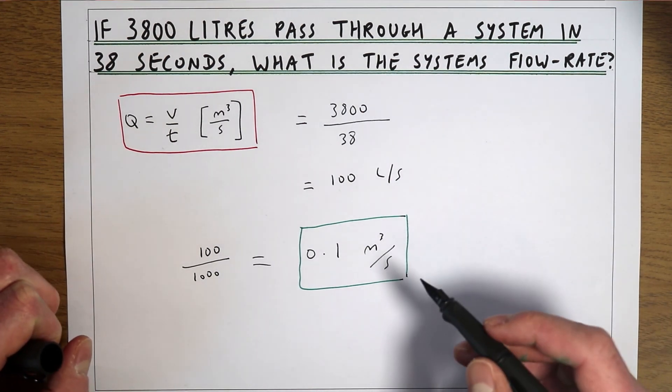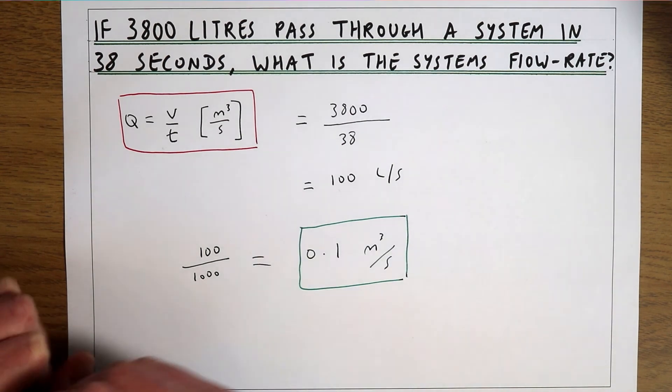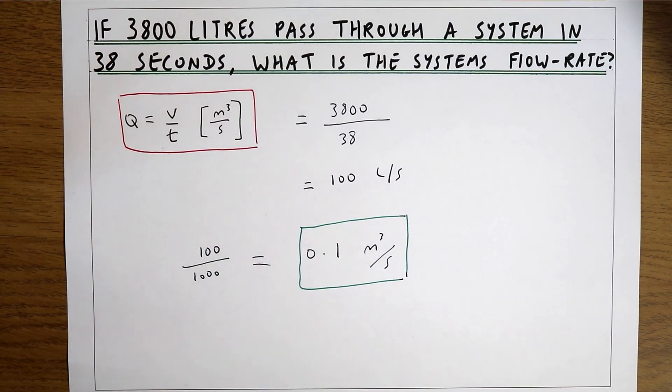If every second that this system is running 0.1 metres cubed is passing through it and that is how we calculate the flow rate or the discharge of a system.